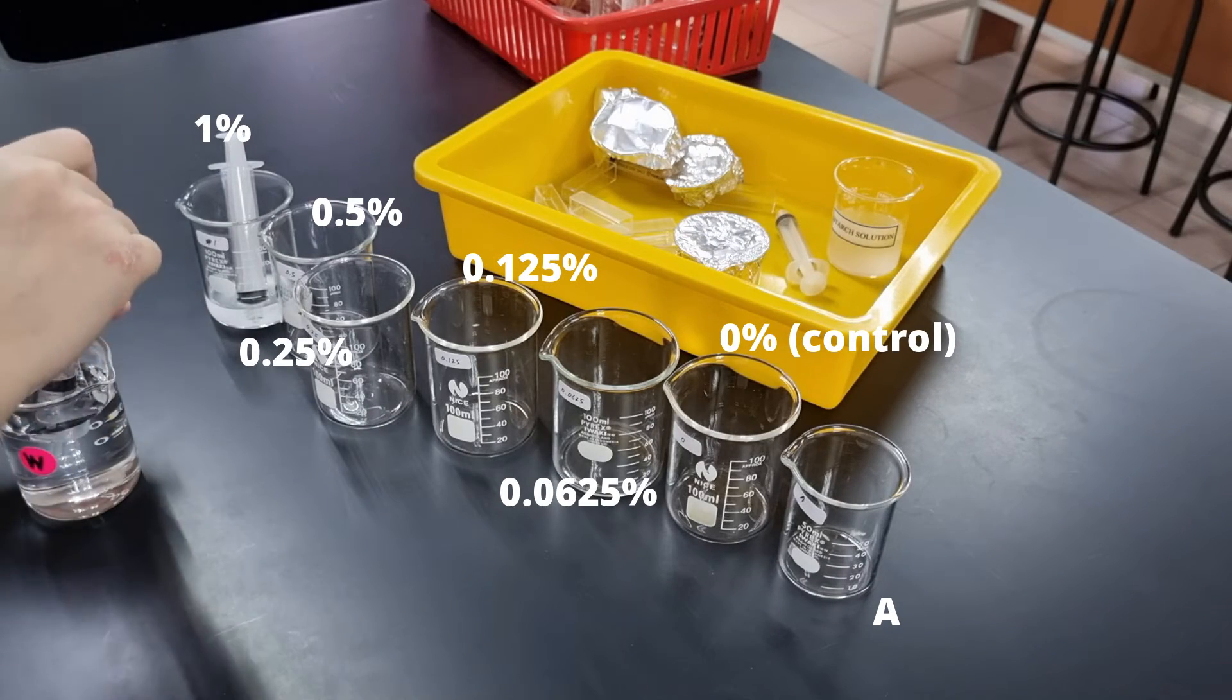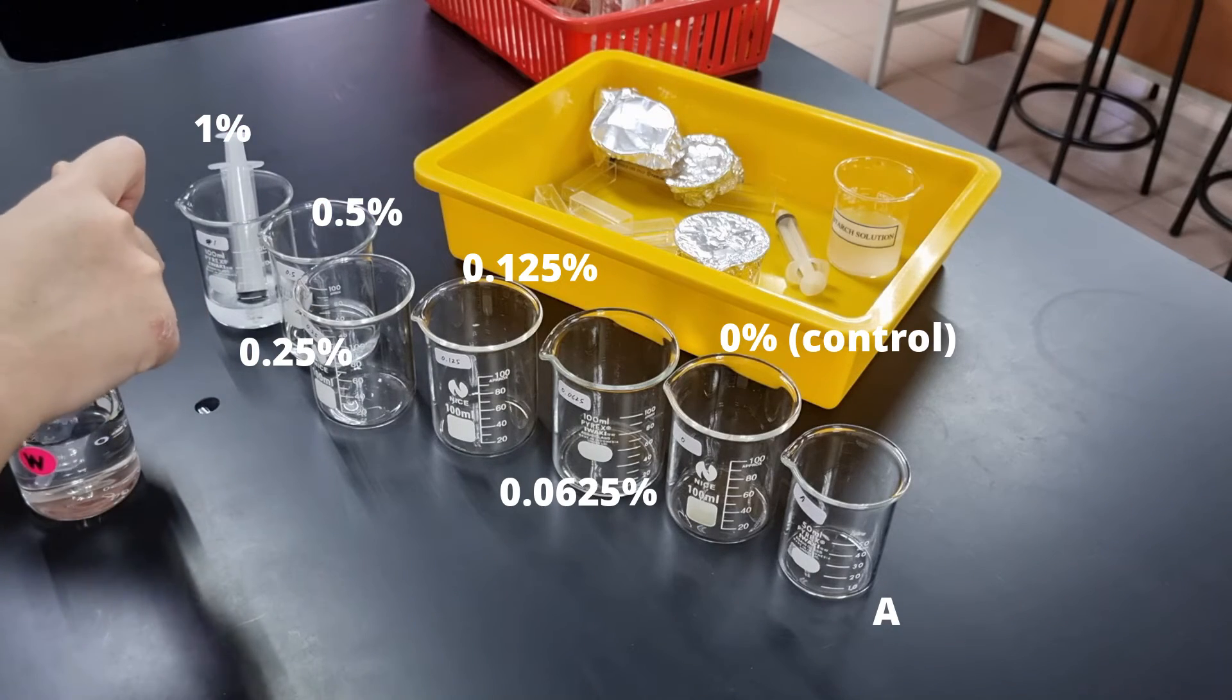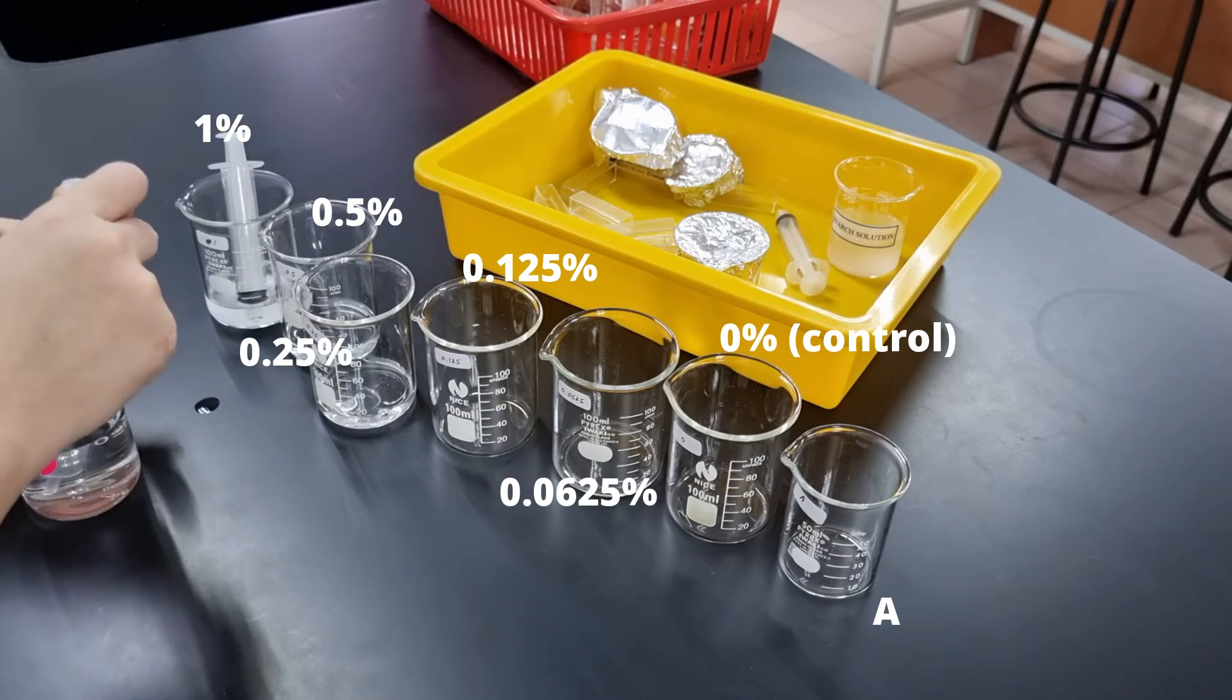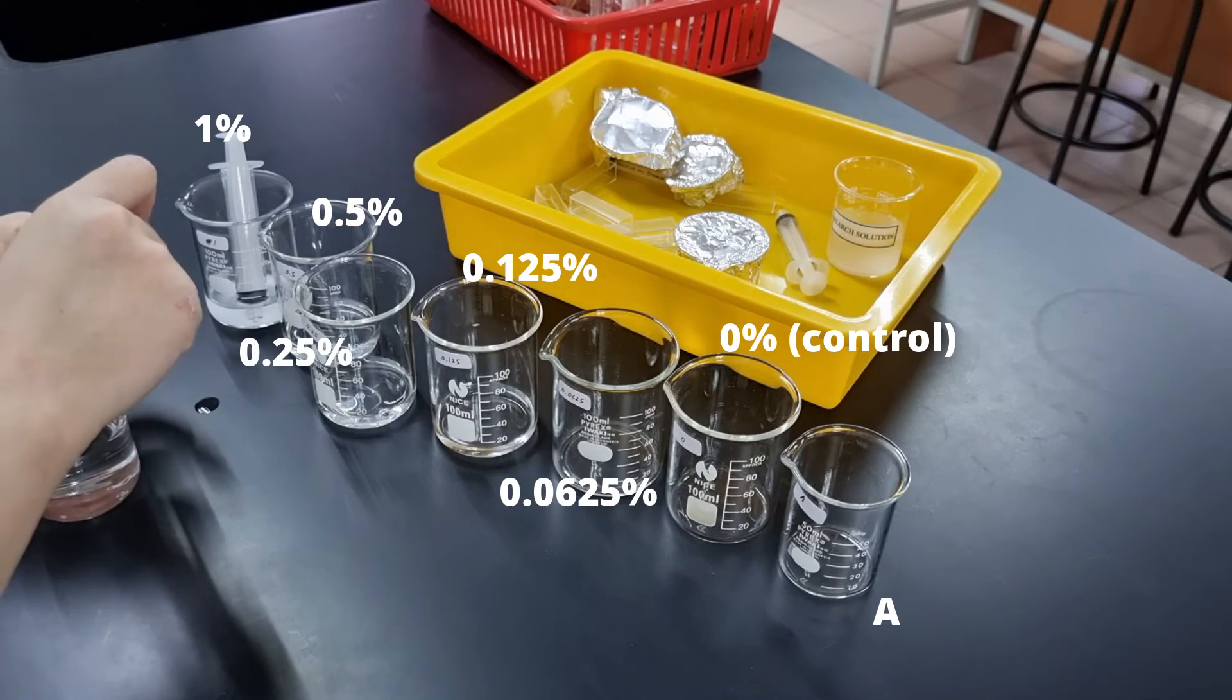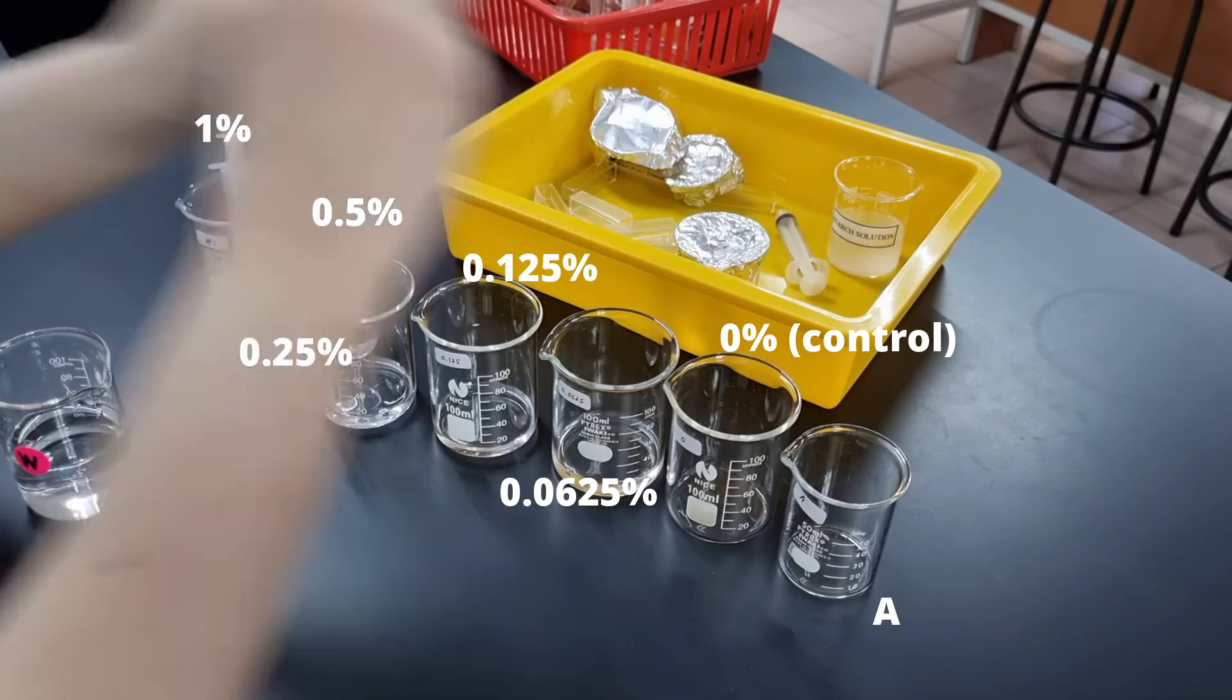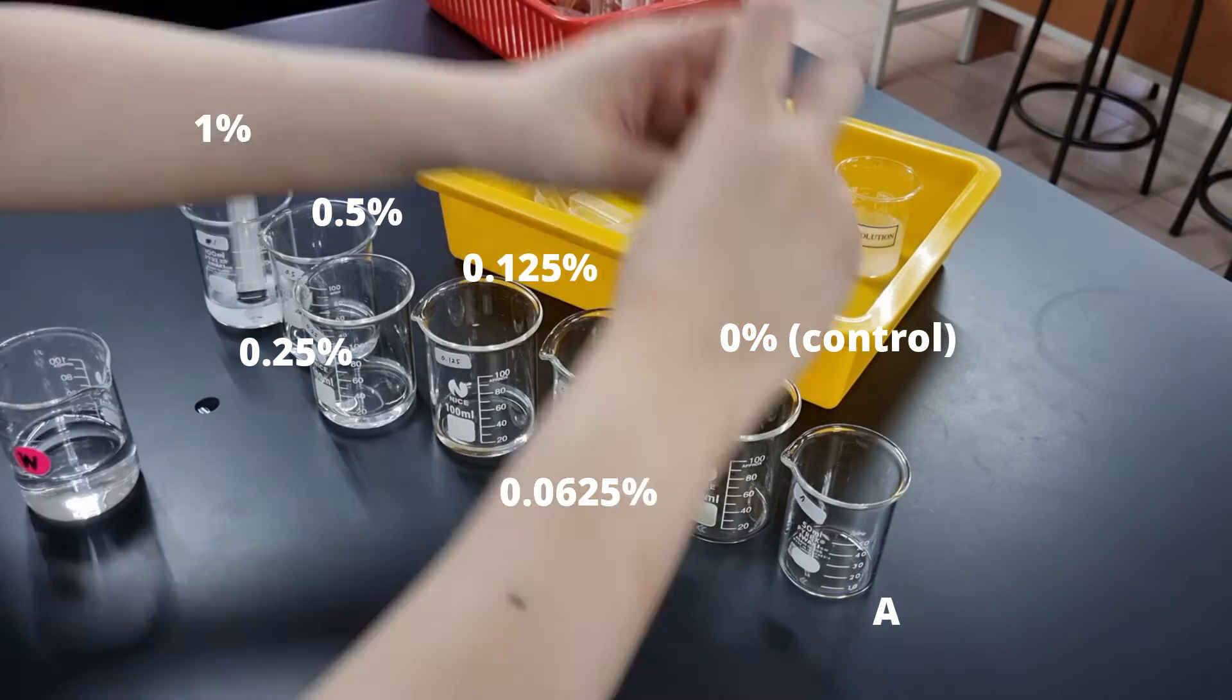Pro tip, with serial dilutions, since the volume of water used in each beaker is the same, which is 10 cm³, I am adding 10 cm³ of water to each beaker first for each concentration, and then only transferring the solutions from one beaker to the other.